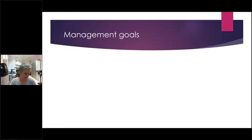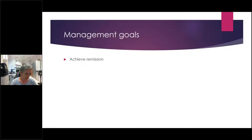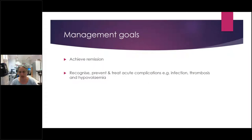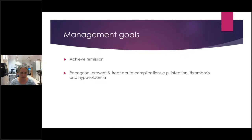The first goal is achieving remission — stopping that protein from leaking. That's the number one management goal for any of our children. Then in that acute phase, it's looking at possible complications that can occur because of the nephrotic state — recognising, preventing, and treating acute complications. Specifically I'm thinking about infection, thrombosis, and hypovolaemia.